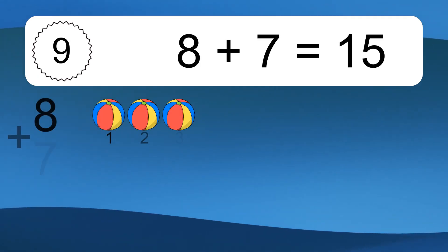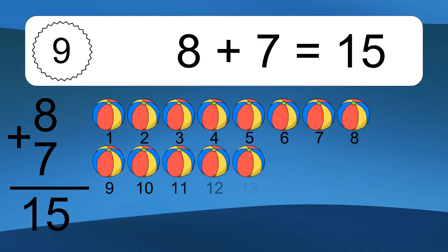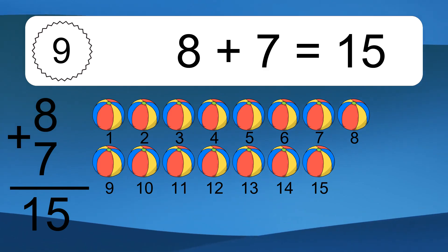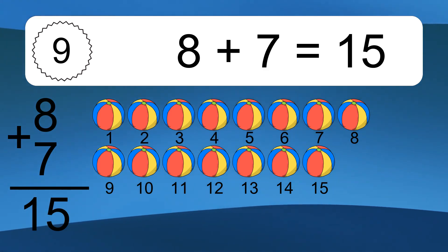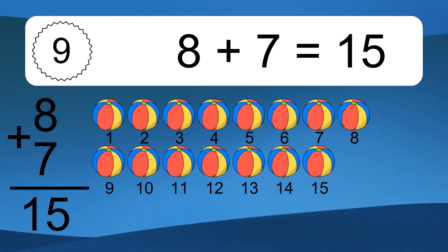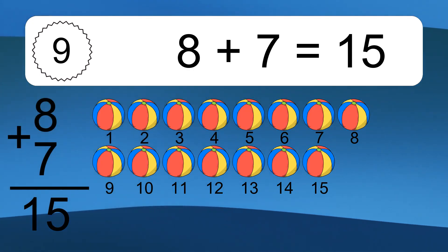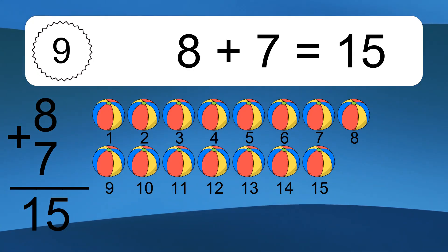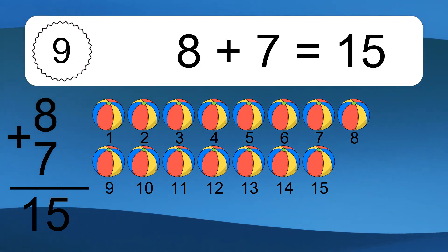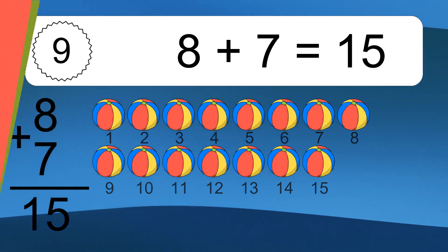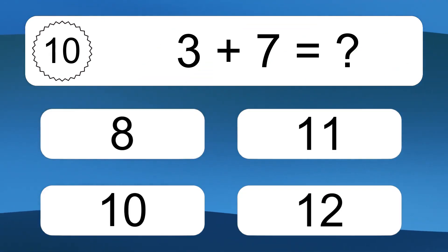8 plus 7 equals what? 8 plus 7 equals 15. Let's count it. 1, 2, 3, 4, 5, 6, 7, 8, 9, 10, 11, 12, 13, 14, 15.